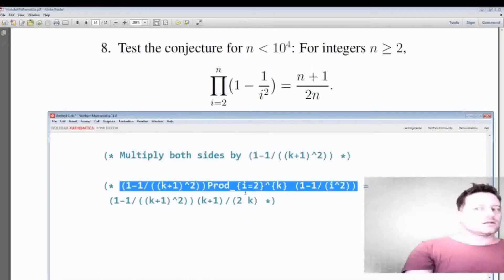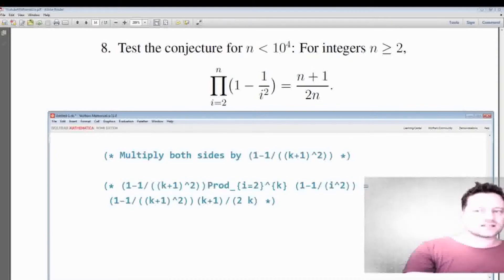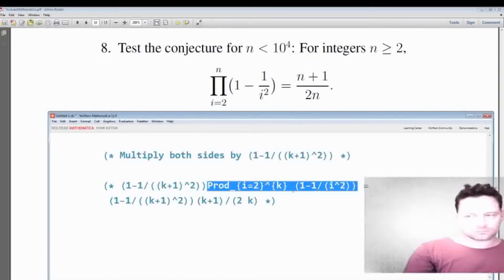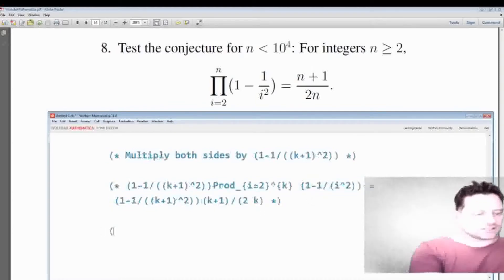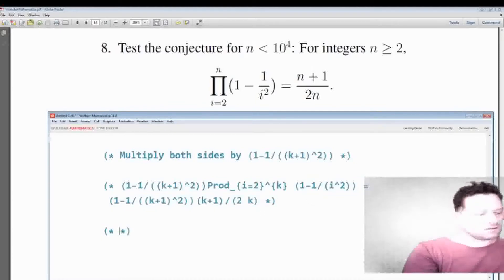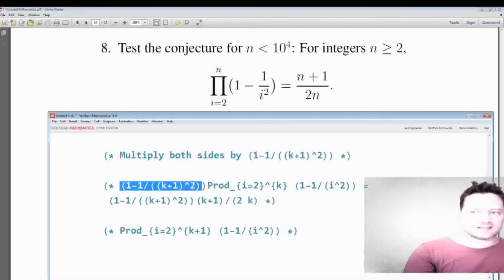All right, now next, on the left, so this is actually the product from i equals 2 to k plus 1. All right, so the left hand side is actually just this, but now we have k plus 1. All right, because we can take this and make it be part of the product.